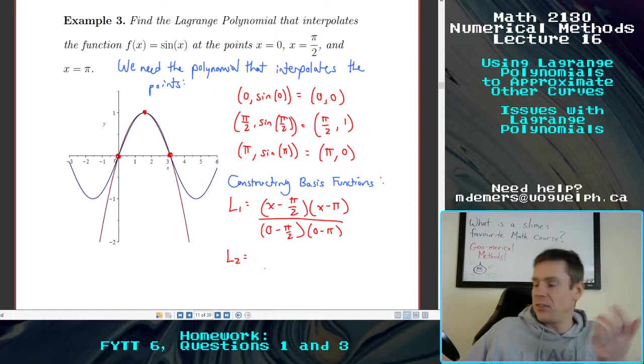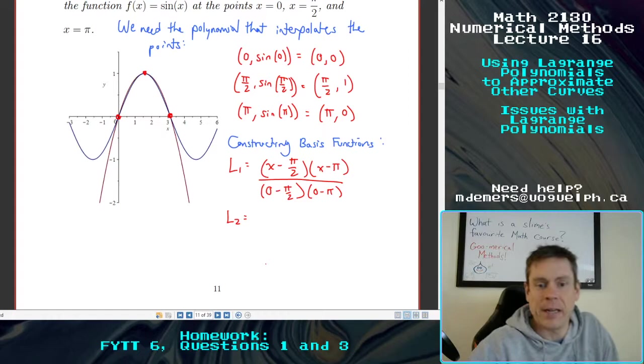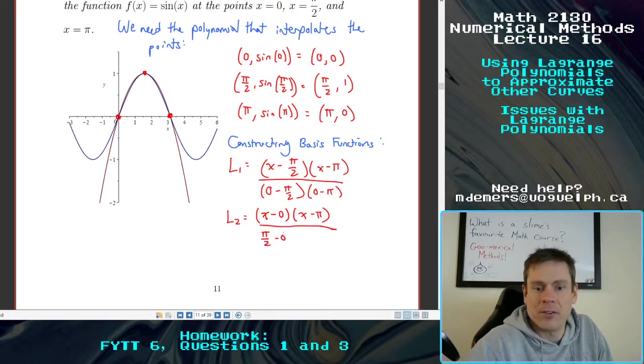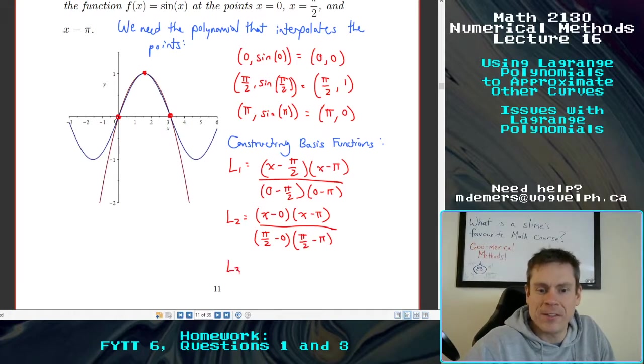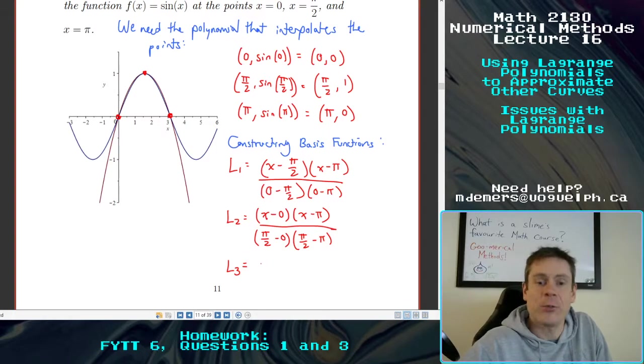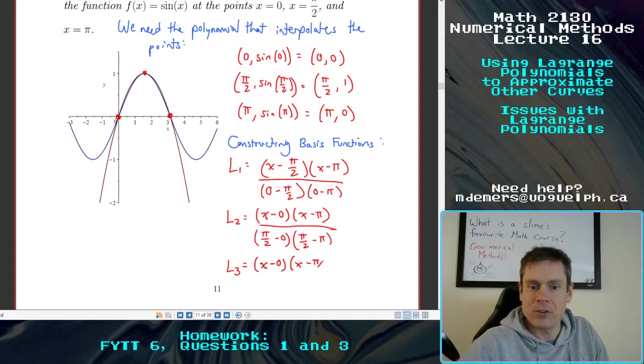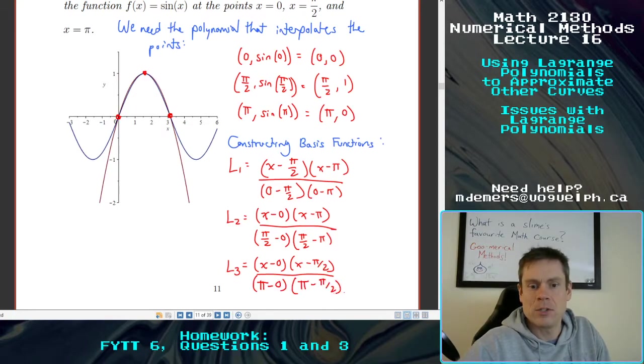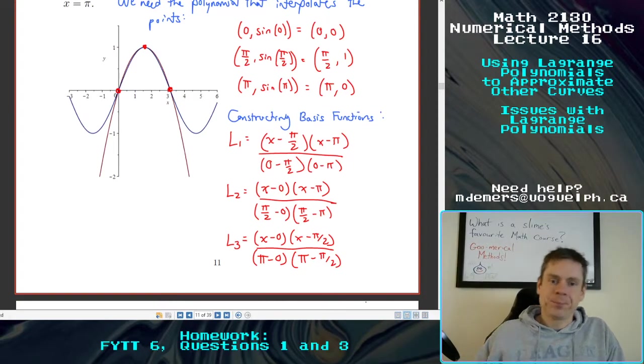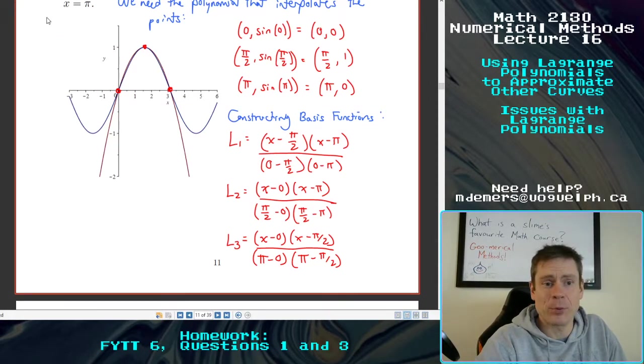L2 is going to do the same, but it's going to skip over the pi over two, top and bottom. So we're going to get (x - 0)(x - pi) over (pi/2 - 0)(pi/2 - pi). We can simplify these later. And L3 is going to skip over the pi. So it's going to be (x - 0)(x - pi/2) over (pi - 0)(pi - pi/2).